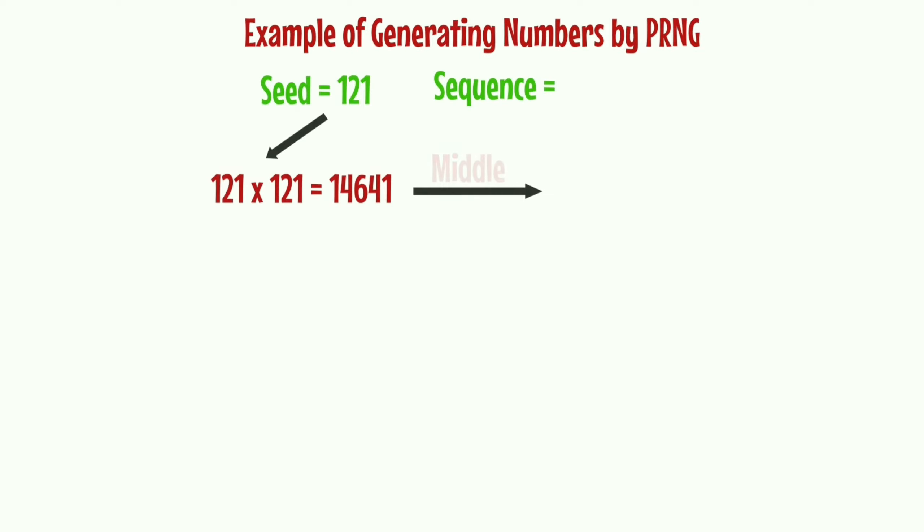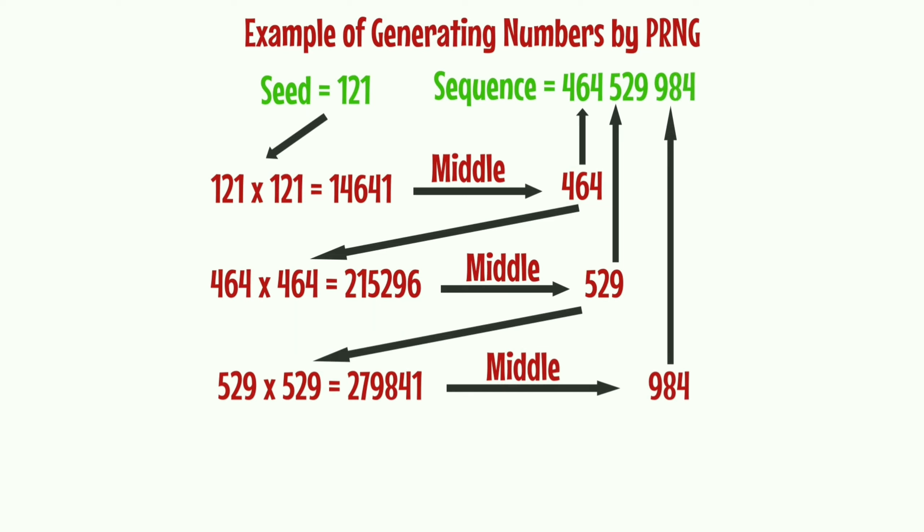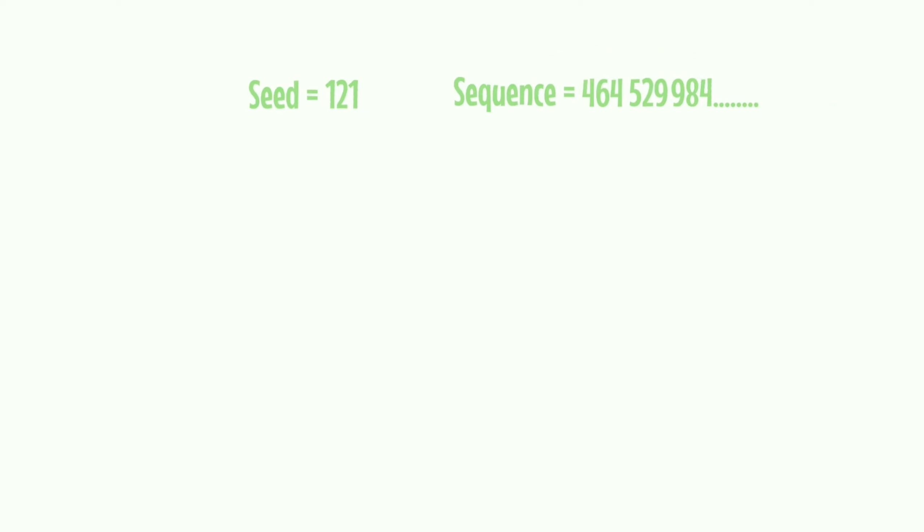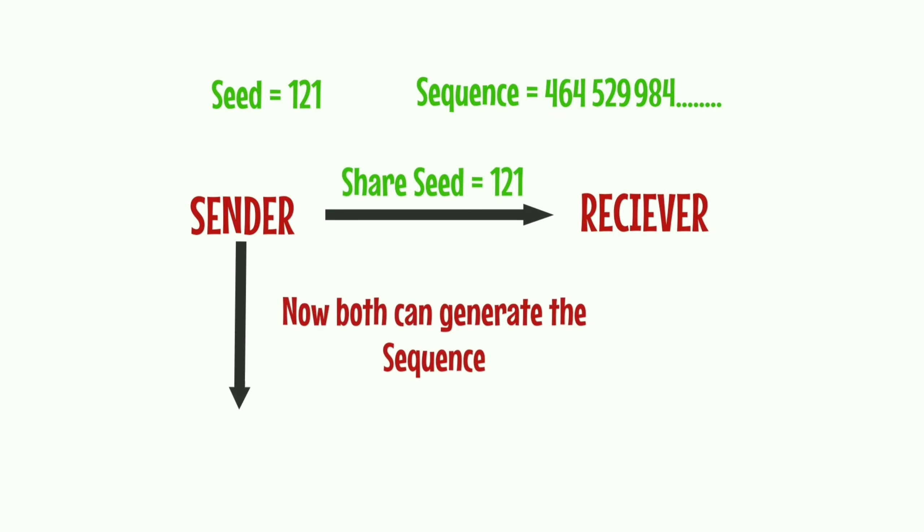The middle digits 14641 are 464 and so on. If you at the site of the sender start with the seed 121, you will get sequence 464529984. The receiver using the same shared seed will in the end get the same sequence.